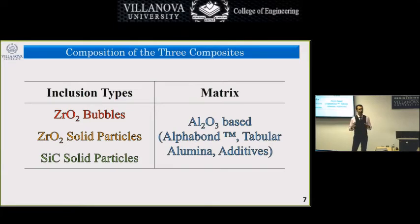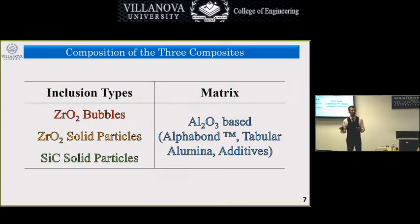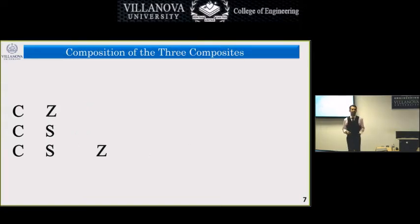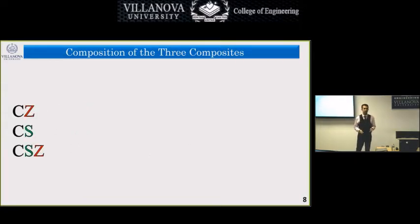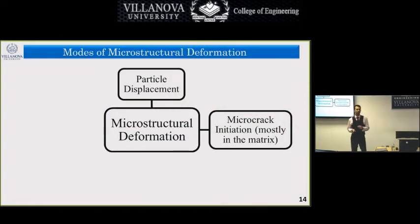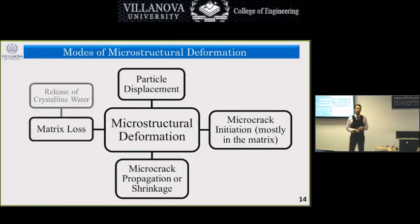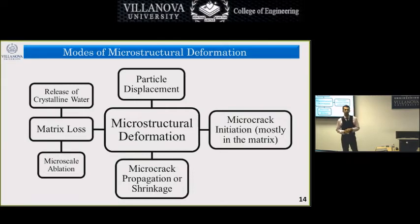We designed different types of composites with an alumina-based matrix and different volume fractions of three groups of inclusions: zirconia bubbles, zirconia particles, and silicon carbide particles. The three composite types are called castable zirconia, castable silicon carbide, and castable silicon carbide zirconia — or CZ, CS, and CSZ — where Z stands for zirconia and S stands for silicon carbide. Key damage mechanisms include microcrack initiation in the matrix, microcrack propagation and shrinkage, and finally matrix loss due to release of crystalline water or micro-scale ablation.